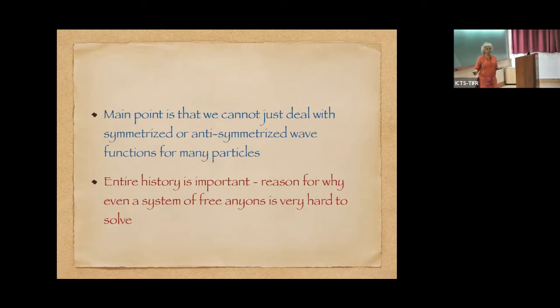The main point I want to emphasize here is that if you have a many particle system, what that means is that you can't just deal with symmetrized or anti-symmetrized wave functions. For the entire history is important because every pair of particles, it depends on how they've been exchanged either in a clockwise or an anticlockwise direction. So even a free system of anyons is very hard to solve. It's as if you are working with a very complicated many body, strongly interacting system.